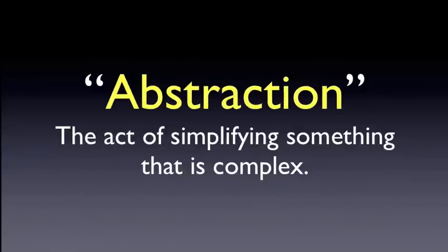Objects are an abstraction. One of the nice things about this concept of objects is that abstraction allows us to simplify things that are complex. Think about something like your car — you can drive it through a simple interface of a steering wheel, gas pedal, brake pedal, and shifter, but you don't need to understand the physics of the engine or internal combustion. The car abstracts the complexities of the machine and presents you with a simple interface. Objects do the same thing.